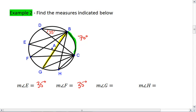Now take a look at angle G. This one also intercepts arc BC, so this one is also 35 degrees. And finally we see angle H also intercepts arc BC. So yet again we have an angle that is 35 degrees.